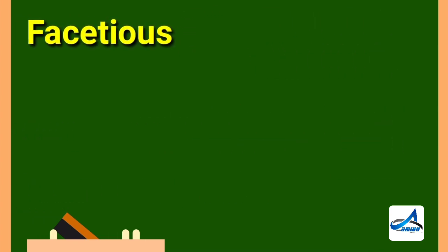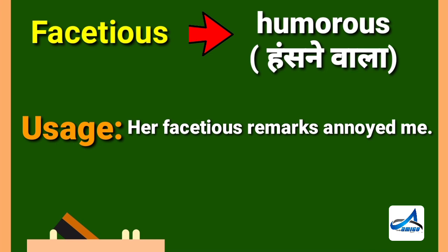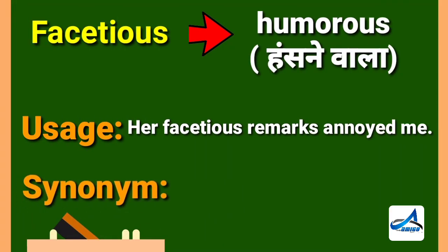The next word is facetious. Repeat after me. Facetious. Friends, facetious means humorous. In Hindi, you can say hasne wala. Now, its sentence, her facetious remarks annoyed me. Its synonym is waggish.